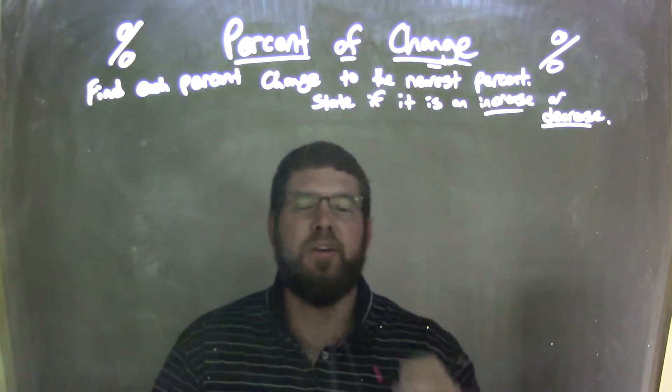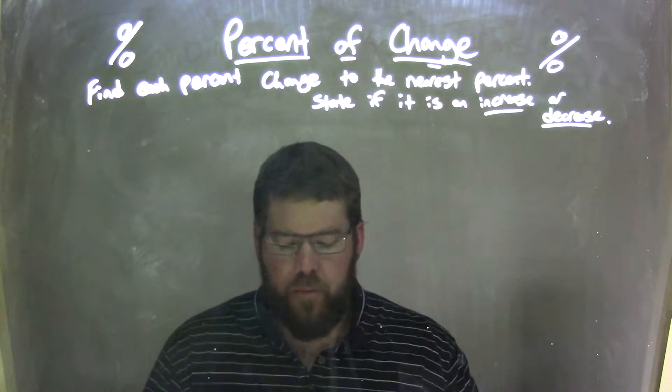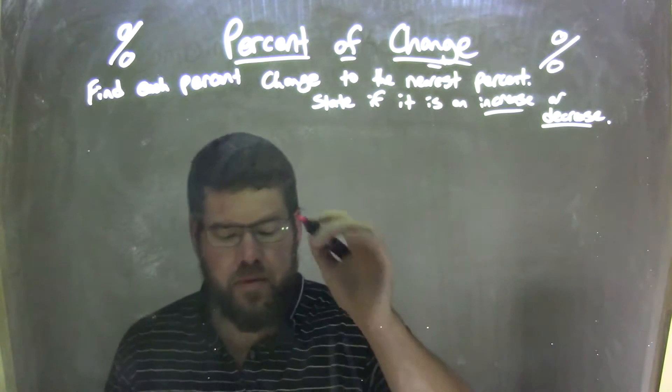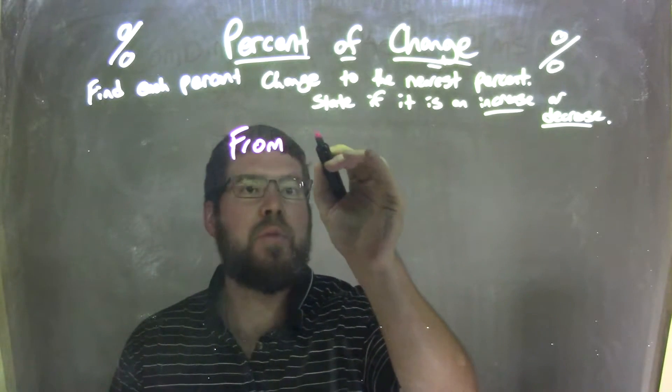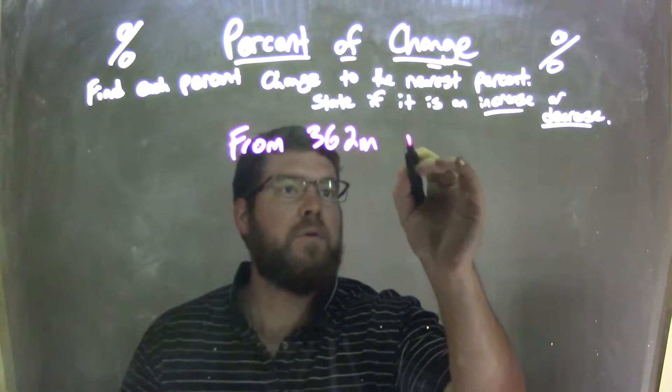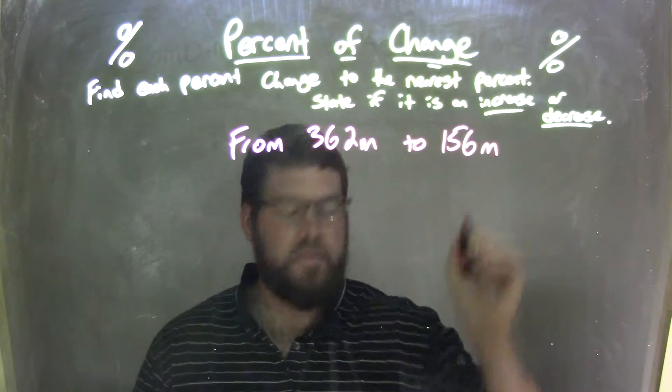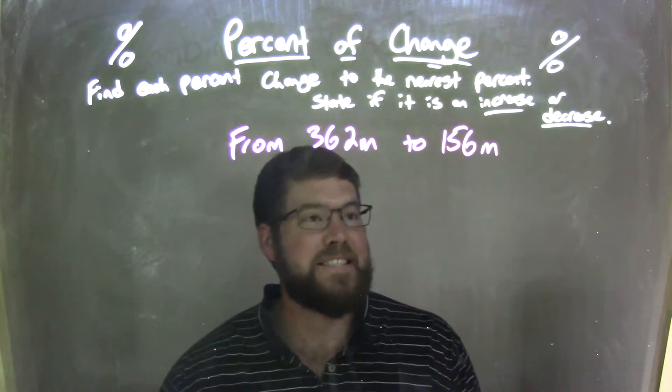I'm going to find each percent change to the nearest percent and state if it's an increase or a decrease. So, if I was given this problem from 362 meters to 156 meters,